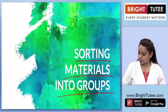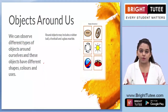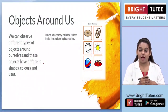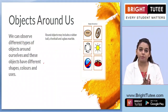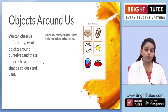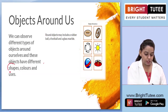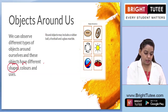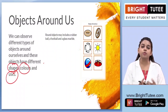Let us now move ahead and look around ourselves. There are a number of objects you can observe, and you have to classify them or sort them into different groups. After observing the objects, you can sort them on the basis of their shapes, colors, and uses.